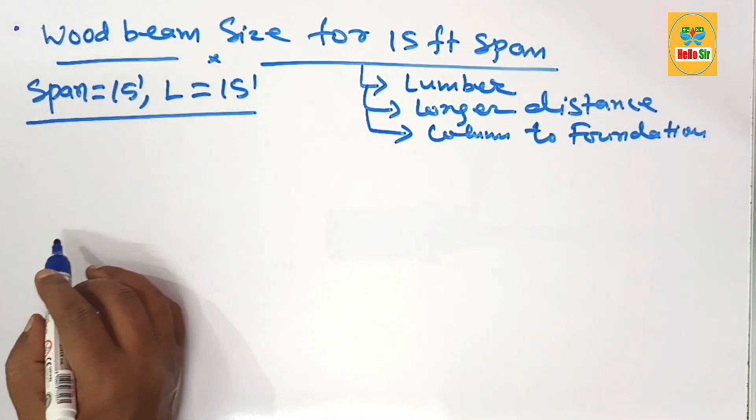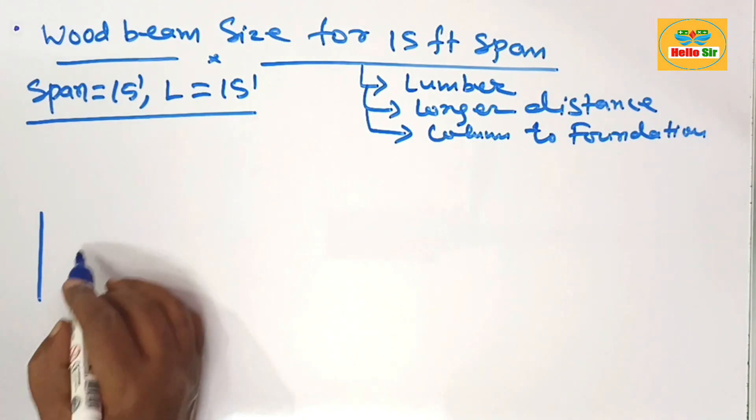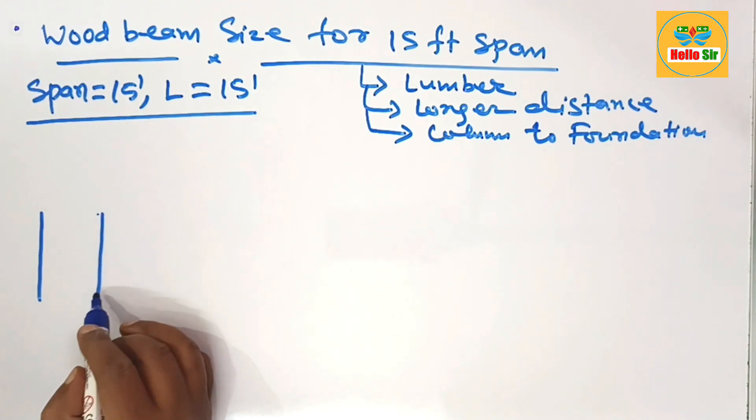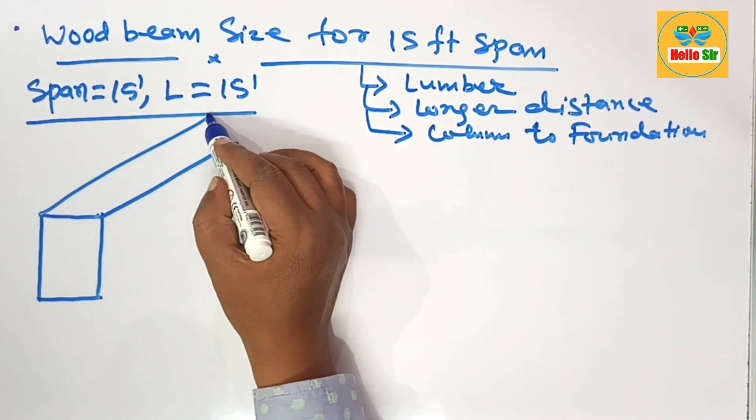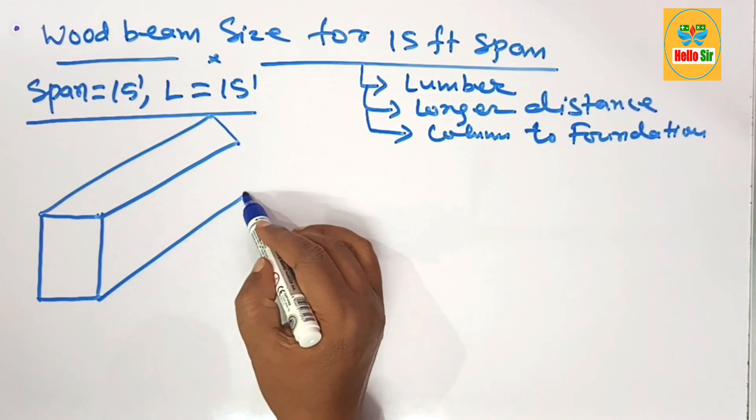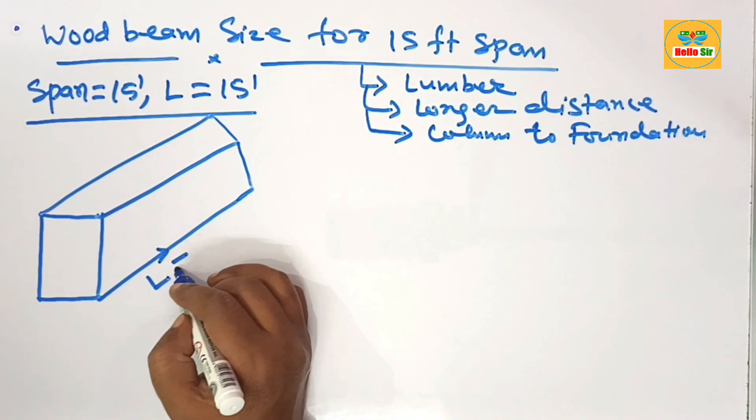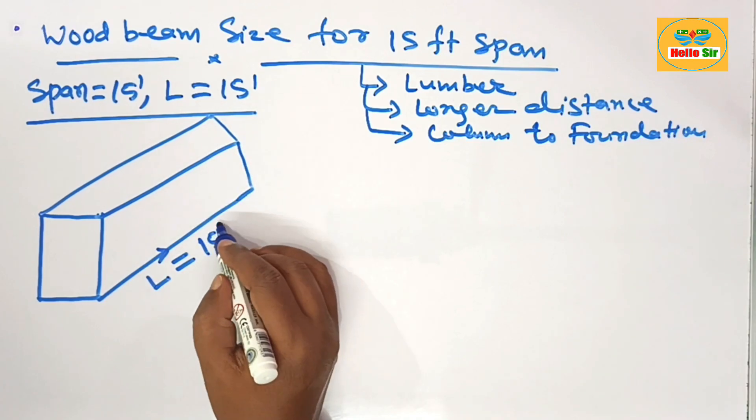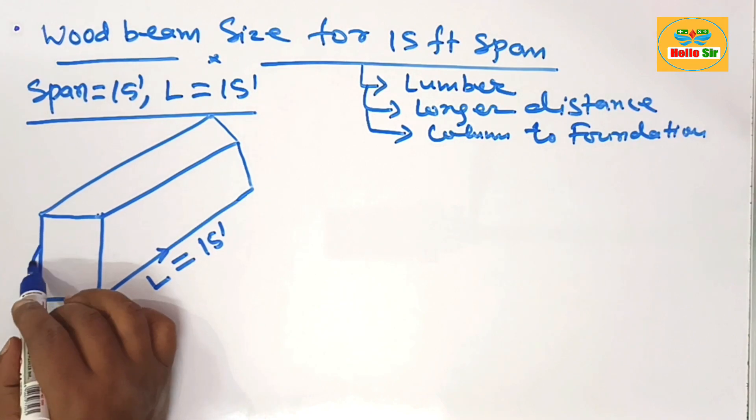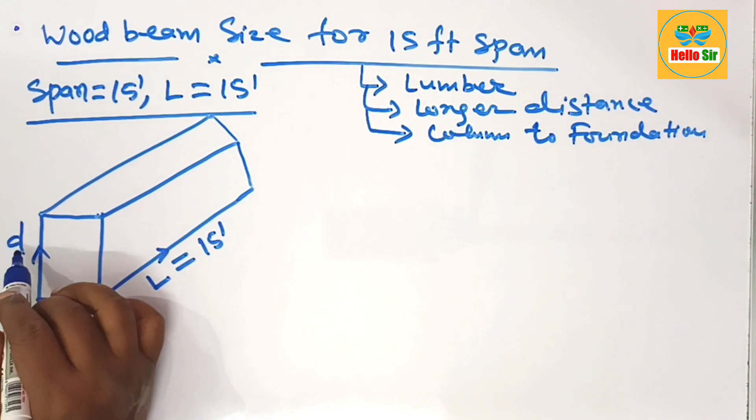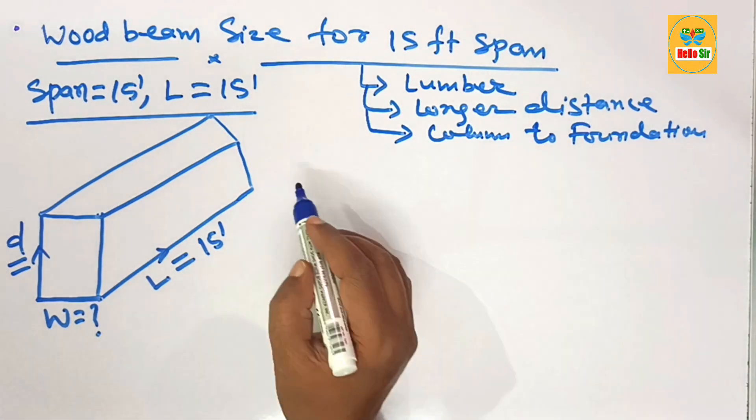Here, first we'll understand the different dimensions of the wood beam. We'll make a rough diagram to understand the length, width, and depth of the beam. This is the length of the beam, which is given as 15 feet. This is the width section of the beam which is required, and this one is the depth section of the beam which is required.